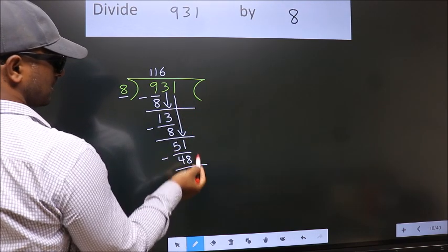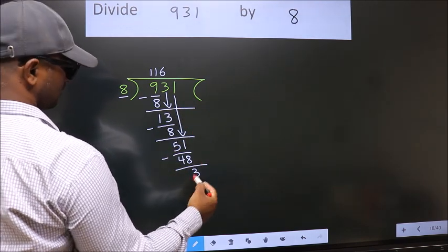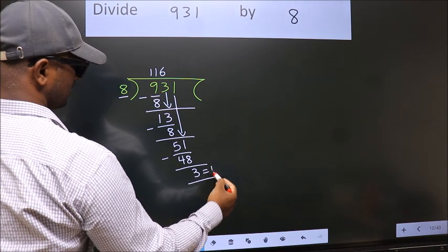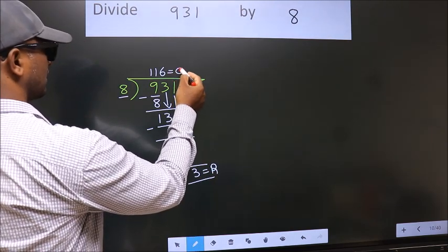No more numbers to bring it down. So, we stop here. This is our remainder. This is our quotient.